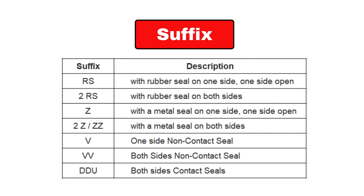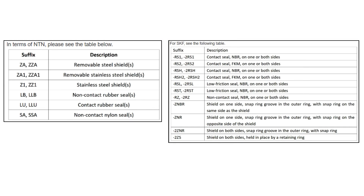Now let's discuss the suffix. The suffix gives information related to the seal and shield of the bearing. Common suffix codes you'll see include RS, 2RS, Z, and 2Z, as shown in the table. The suffix varies by company — it depends on the types of shields and seals they provide and how they describe them. For NTN bearings the suffixes are different compared to SKF bearings. For SKF bearings, there are different suffix codes used as well.